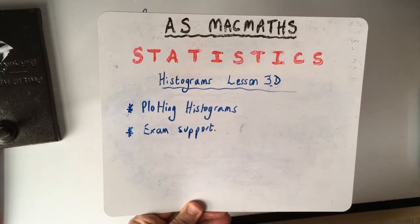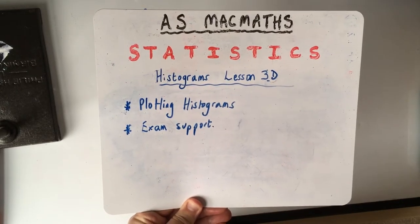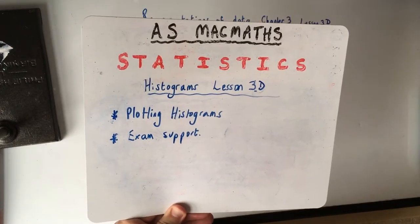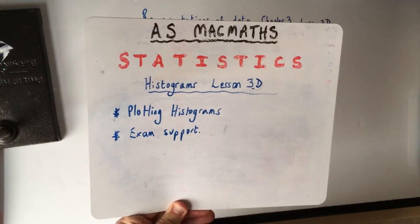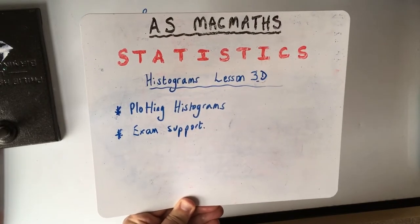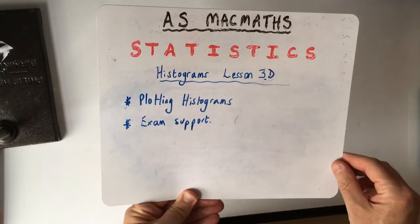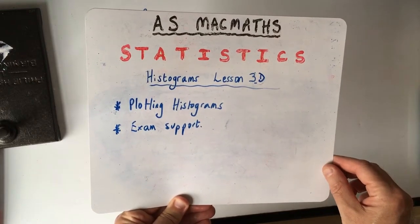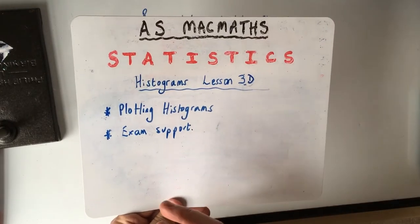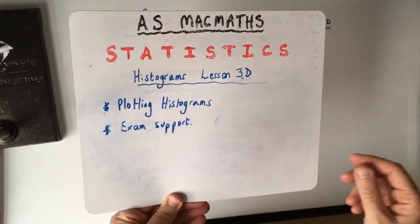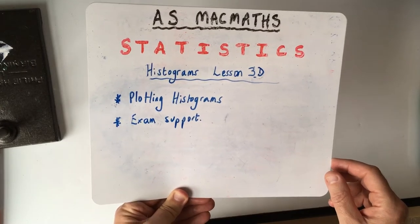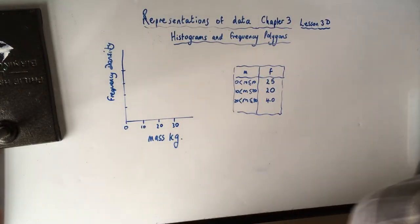Let's do some maths today - statistics. So today we're looking at histograms, and we'll do some questions. Let me explain what histograms are again from GCSE. If you remember, they're always the grade A questions at GCSE, but they're fairly straightforward - they're just posh bar charts. So let's have a look at histograms and then we'll do some questions from Exercise 3D.